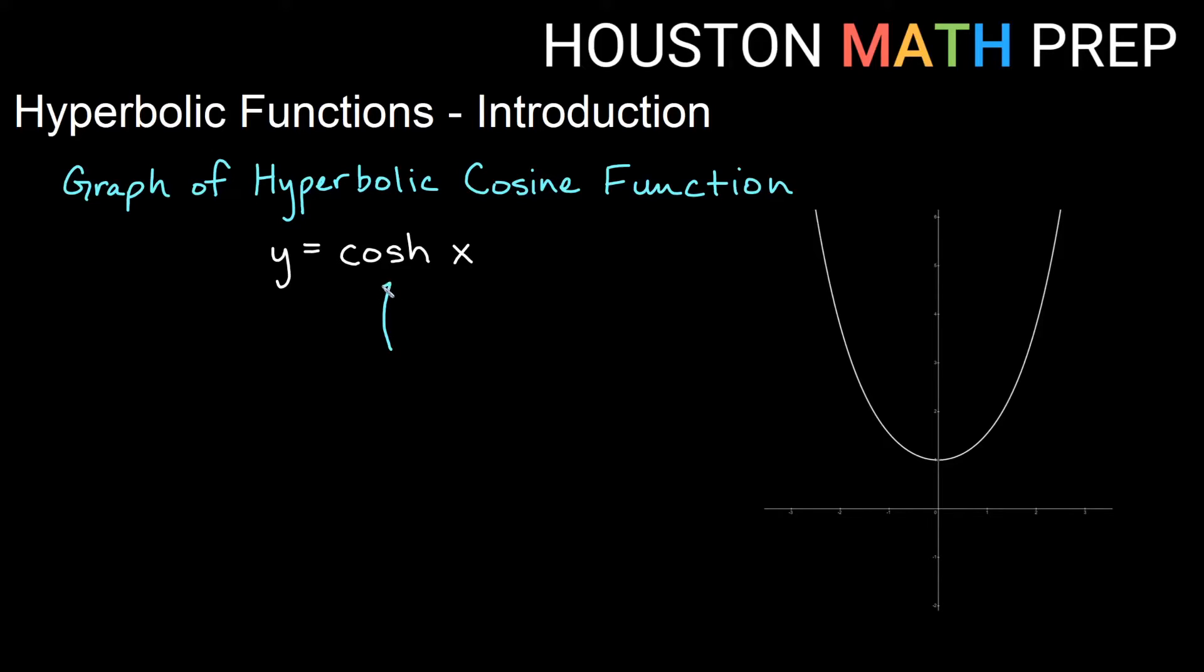Hyperbolic cosine in North America can often be pronounced as cosh, just sort of as it looks. So you may, instead of calling this y equals hyperbolic cosine of x, call this y equals cosh x.